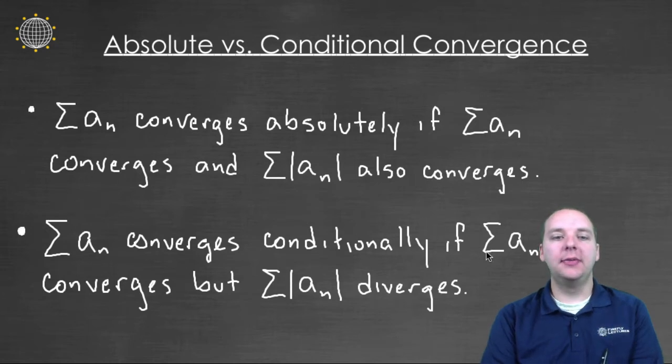But if the series converges and the sum of the absolute value of those terms diverges, we say that the original series converges conditionally, not absolutely. I totally understand that's a very wordy definition, but it's actually not as complicated as it sounds.